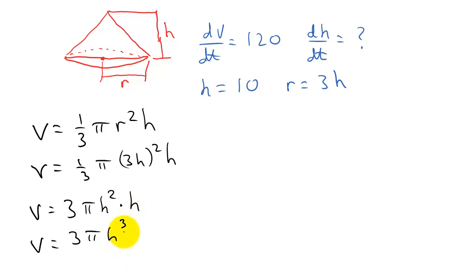So now we have our formula all in terms of h. So now if I differentiate, if I take the derivative of this with respect to time, that's going to give me dv dt is equal to, so the three comes down. So three times three times three is nine times pi times h, and I subtract one, h squared times dh dt.